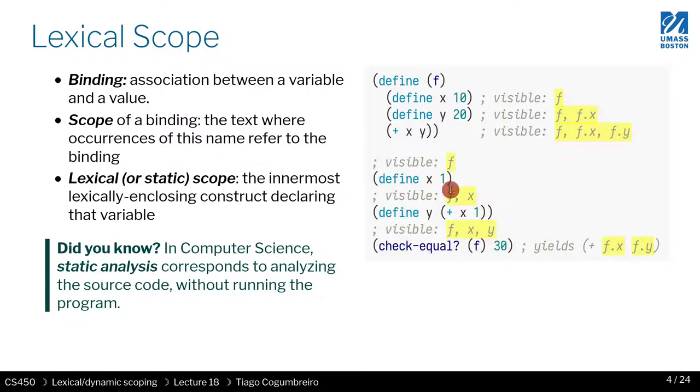Lexical scoping is also known as static scoping. Whenever you see static in the realm of programming languages, that means without running the code. Static analysis means analyzing a program without running it, whereas dynamic, by opposition, refers to a property where you need to run the code. So dynamic scoping is a form of scoping that requires execution.